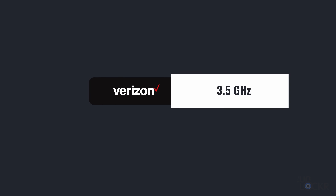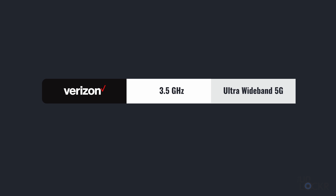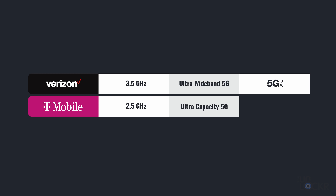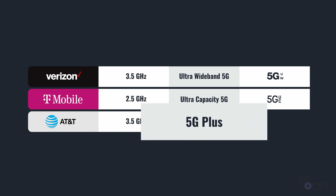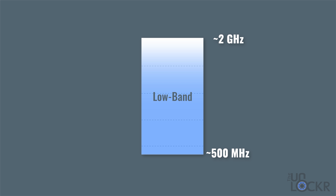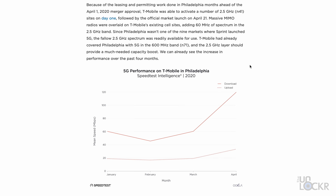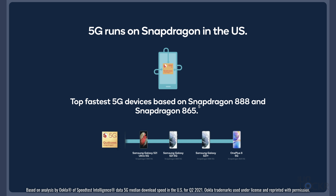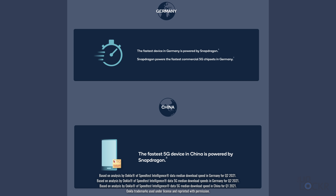Some examples: Verizon is planning to use 3.5 gigahertz, which they'll call ultra wide band, with a 5G UW icon on your phone. T-Mobile uses 2.5 gigahertz and calls it ultra capacity 5G, with a 5G UC icon. And AT&T will also use 3.5 gigahertz and call it 5G Plus. These frequencies are higher than low band so they don't reach quite as far, but they're in a less crowded part of the spectrum — think of it like a larger pipe that can send more data through. According to real-world data from Ookla, Qualcomm and their Snapdragon chipset powers the fastest sub-six devices in Germany and China.